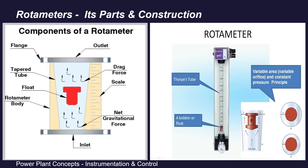Other than these three main parts, a rotameter also has a vertical guide wire to restrict float movement along a vertical axis only. And for installing in the process line, we need connection points — generally flanged connections at the bottom entry as well as the top exit.